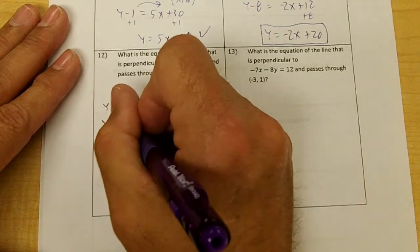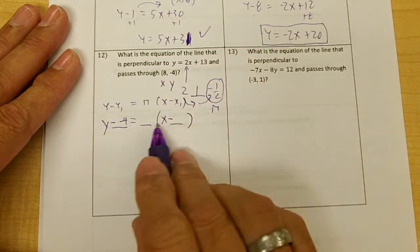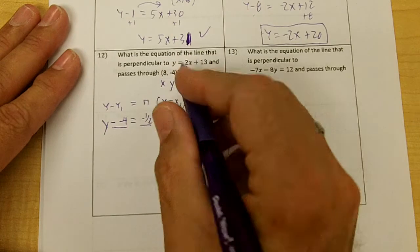My y is negative 4, my m is negative 1 half, and my x is 8.